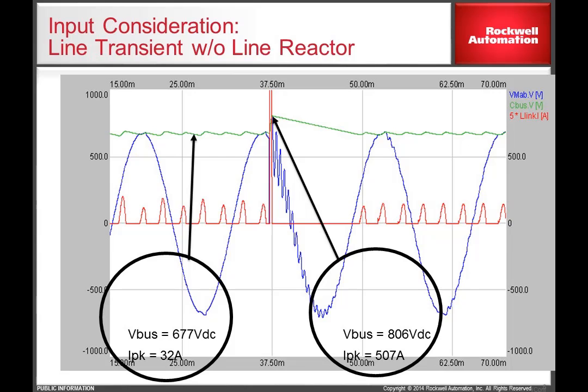The drive DC bus voltage charges up to the peak value of the AC in, which is approximately 806 volts DC. The current to charge up to the higher voltage level is over 500 amps. Under these conditions, the drive could trip on an over voltage or even be damaged because of the high current values.